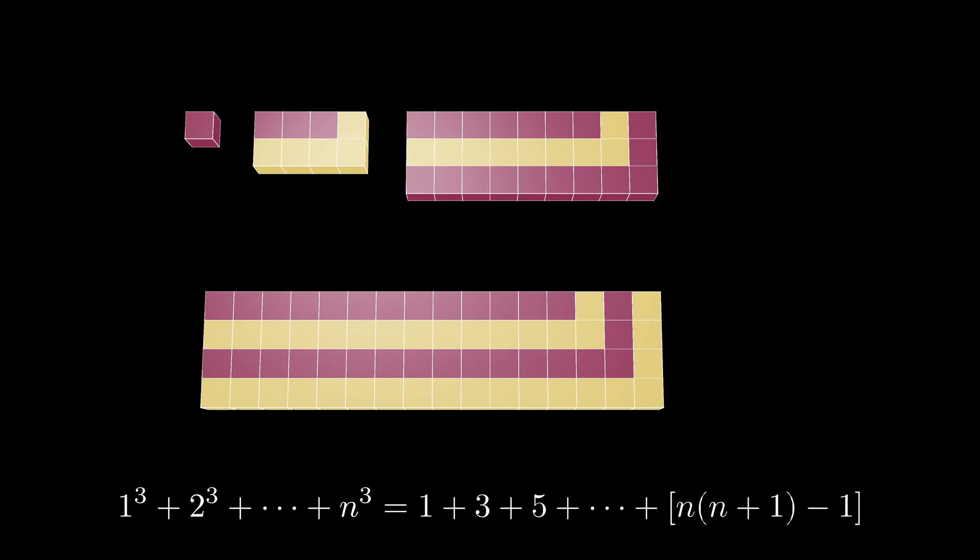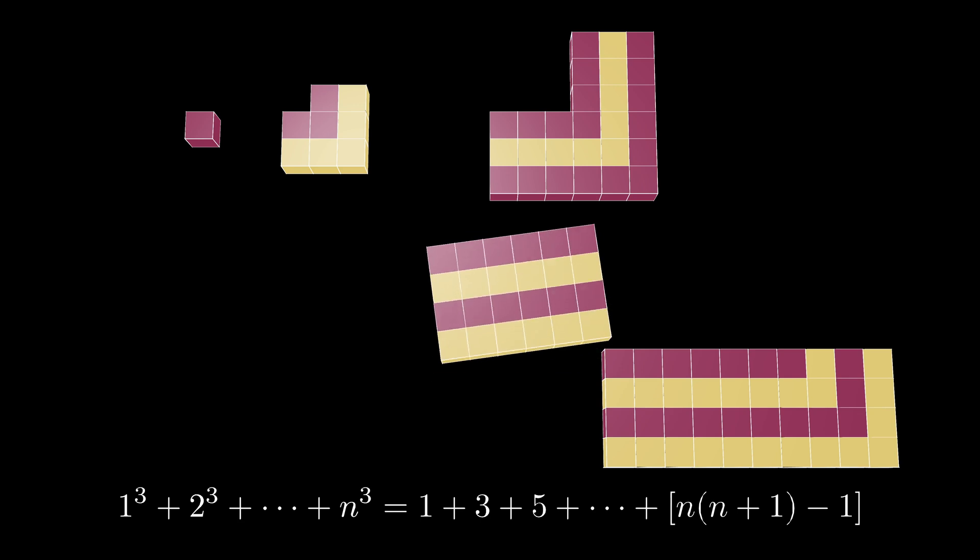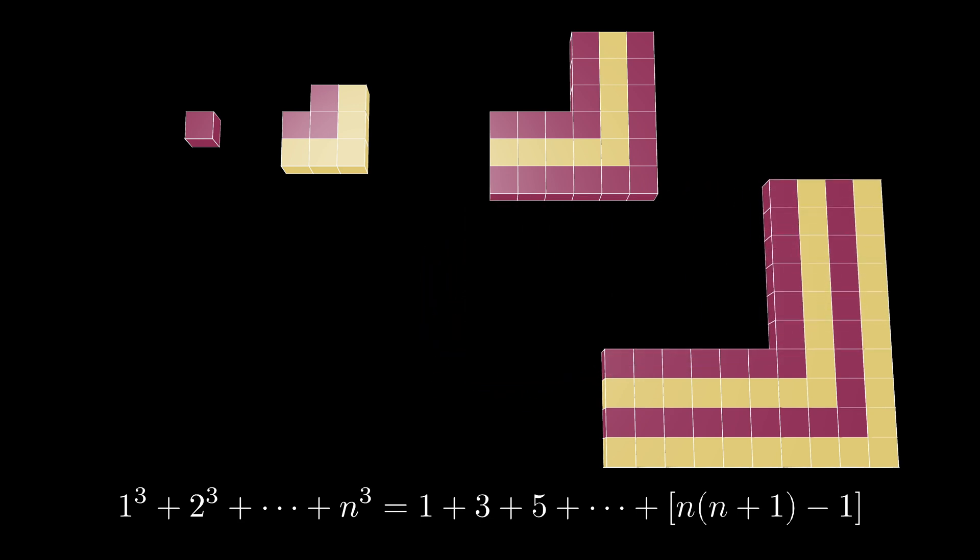We can break each rectangle into two separate rectangles, where one has dimensions n by the nth triangular number. We can take this smaller rectangle, rotate it, and glue it onto the other side of the rectangle, forming an L-shaped gnomon in each case.